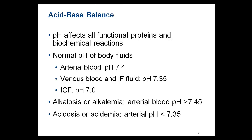pH must be regulated tightly because of how important it is to our system. Imagine all your enzymes — those associated with making energy, steroids, fatty acids, cell membranes, and cytochrome enzymes needed for oxidative respiration — everything can cease to function if pH goes out of range. No wonder metabolic acidosis or alkalosis can be fatal if uncorrected.